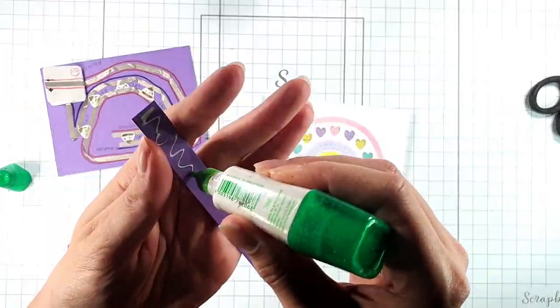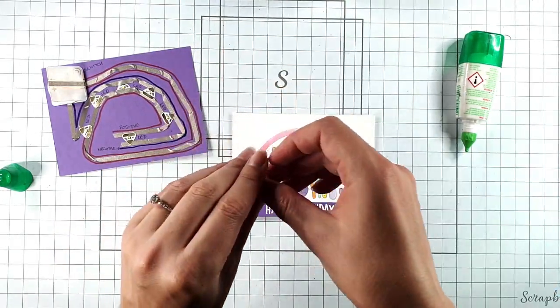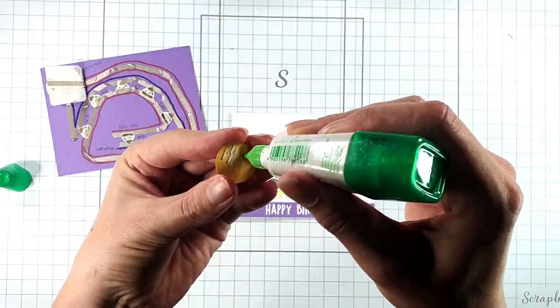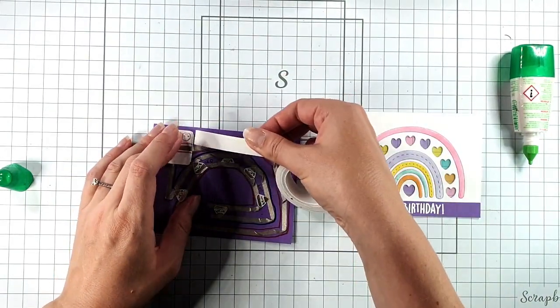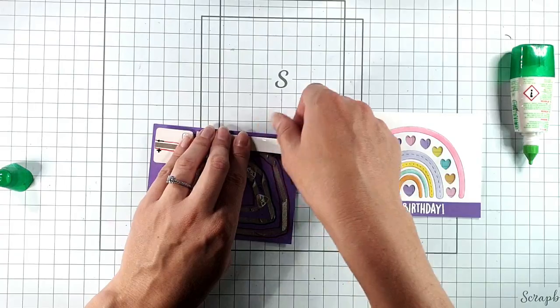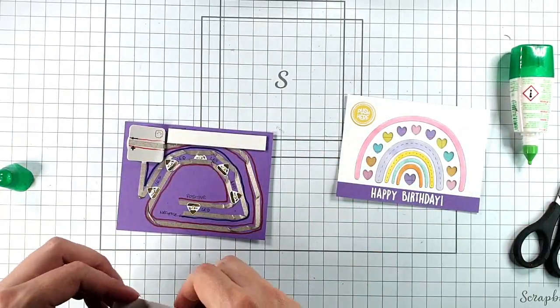So then I'm going to glue the sentiment across the bottom of this panel and then I'm going to glue the push here on in the corner. Then I'm going to grab some of this foam tape that comes in the switch kit and I'm just going to add it on.